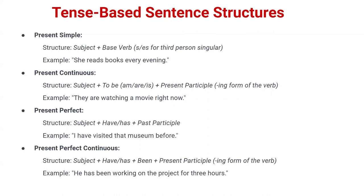Now let's understand present continuous. The structure of present continuous is: subject + to be (am/is/are) + present participle (verb+ing). For example: 'They are watching a movie right now.' Here 'they' is the subject, 'are' is the form of 'to be,' 'watching' is the verb in the ing form, and 'movie' is the object.